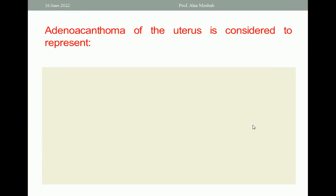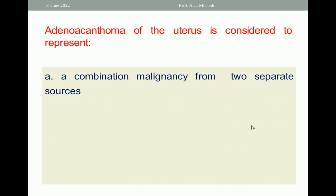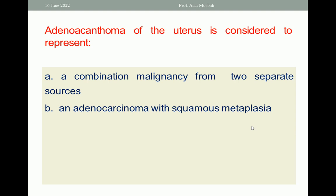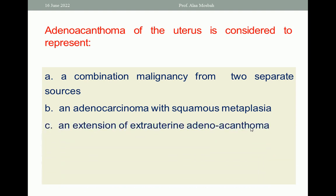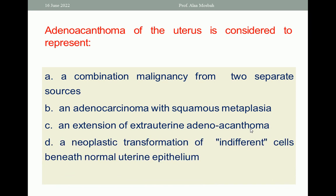Adenoacanthoma of the uterus is considered to represent: A. a combination of malignancy from two separate sources; B. an adenocarcinoma with squamous metaplasia; C. an extension of cervical adenoacanthoma; D. a neoplastic transformation of indifferent cells beneath normal uterine epithelium; E. adenocarcinoma only. The one best response here is B — adenocarcinoma with squamous metaplasia.